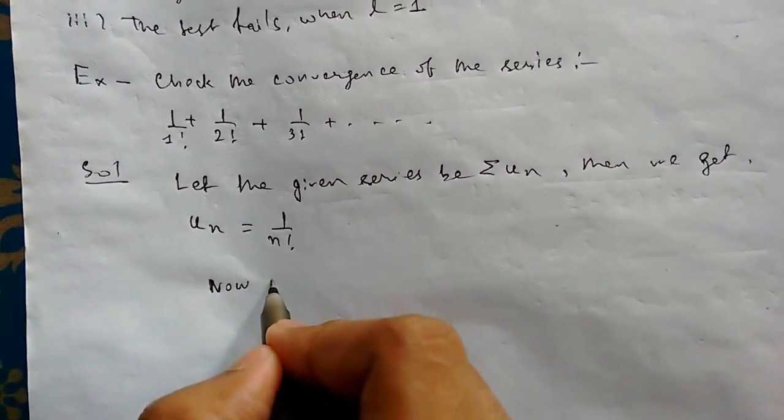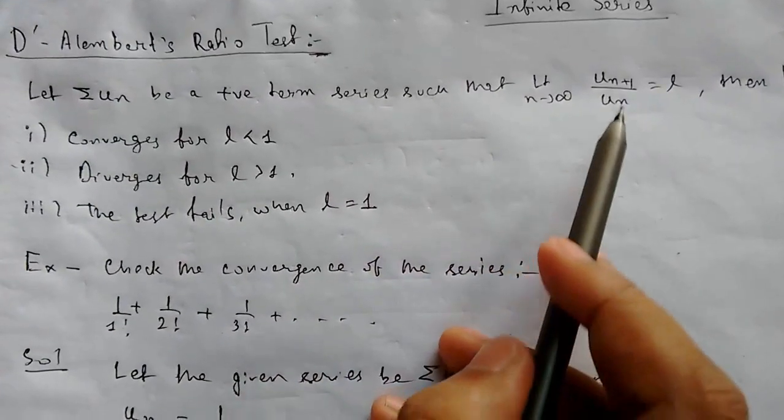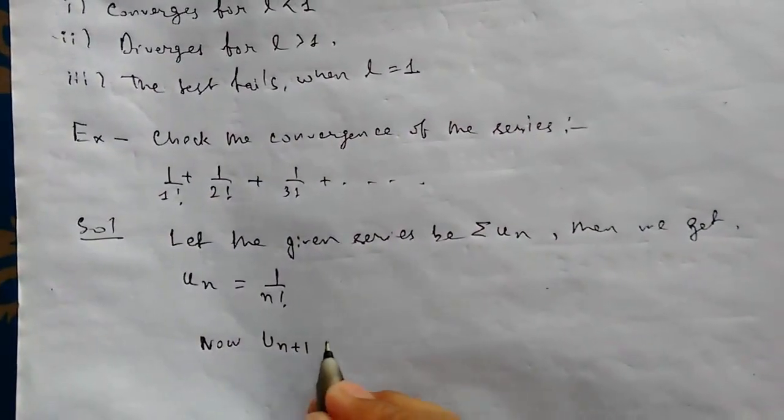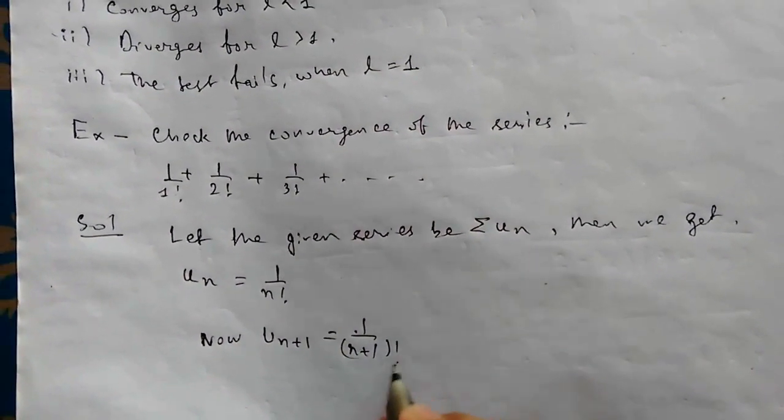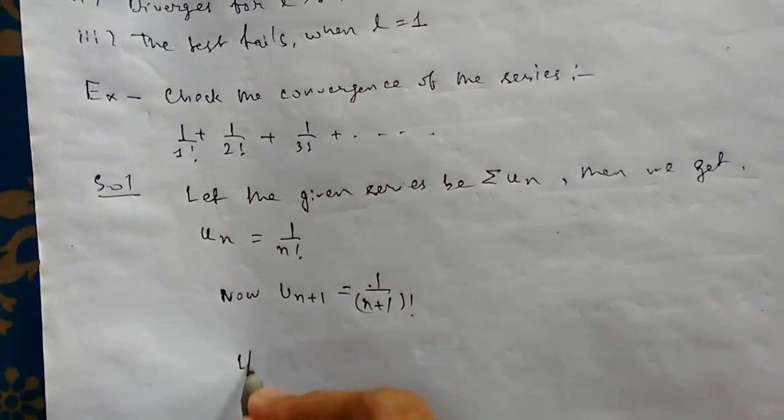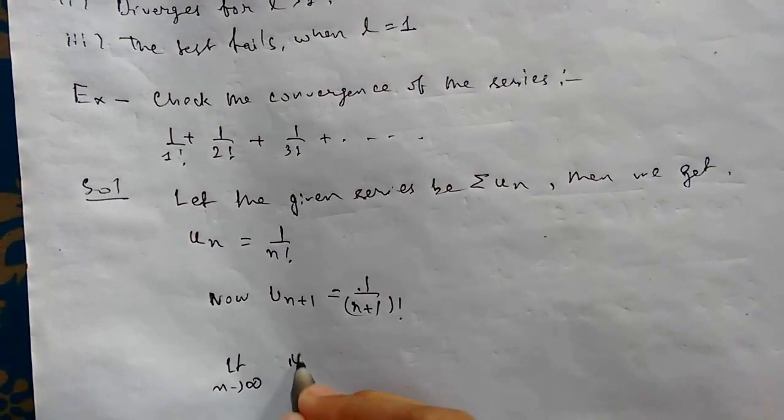use D'Alembert's ratio test. You first need to find U_(n+1), so this will be 1 upon (n+1) factorial. Now limit n tending to infinity of U_(n+1)